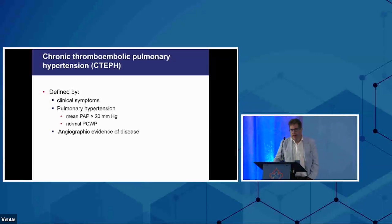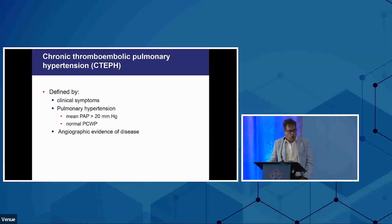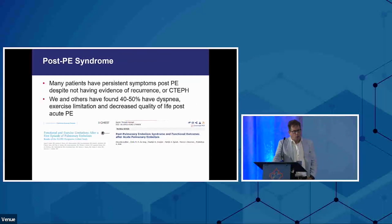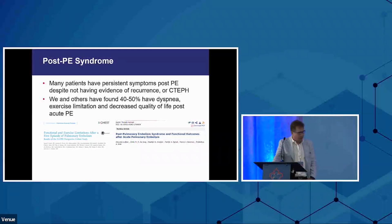And then there's chronic PE, which is really what has changed in recent years. We used to talk only about CTEPH — where you need clinical symptoms, pulmonary hypertension defined by a mean pulmonary pressure more than 20, and angiographic evidence of disease. But it's really just the severe end of a spectrum of long-term consequences of PE. We did a Canadian study with 100 acute PE patients across Canada, putting them through comprehensive testing for a year: repeat CTs, repeat VQ scans, PFTs, exercise tests, six-minute walks, and quality of life assessments.